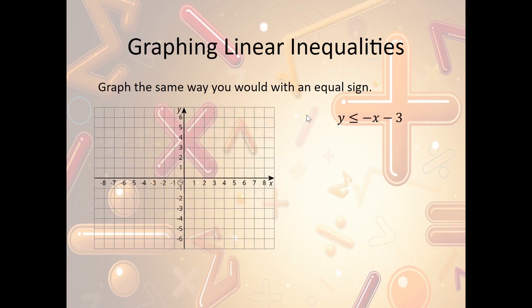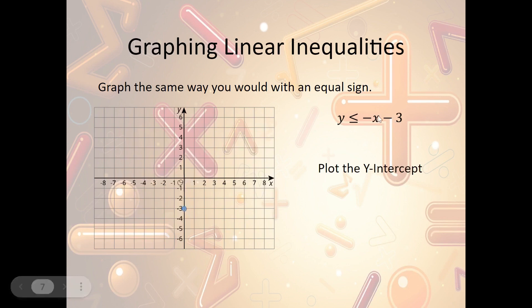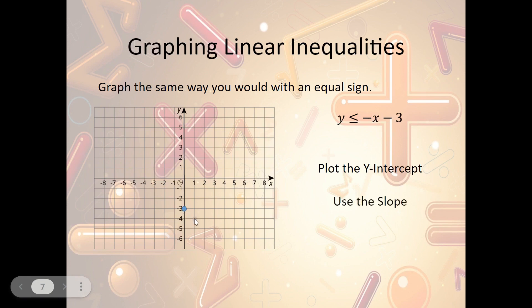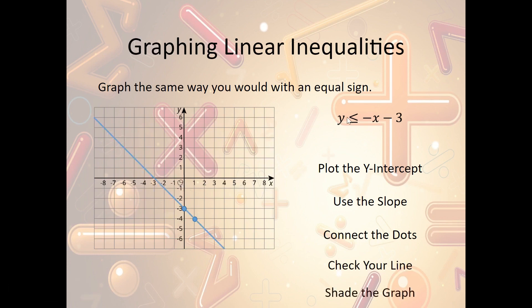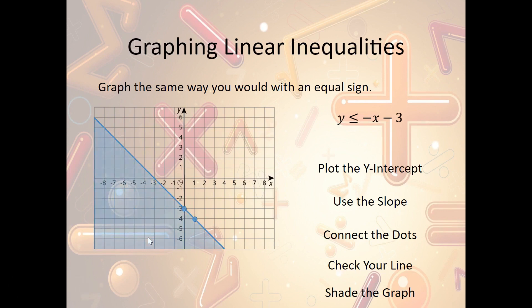Let's look at another example: y is less than or equal to -x - 3. I plot the y-intercept at negative 3, going down 3. My slope is negative x, which is really negative one over one, so I go down 1 to the right 1 and plot that point. They did add something extra — the bar — so we add to it and use a solid line. Then I shade where y is smaller than the line: going along the y-axis, I find where they meet and shade the area below. That's how I graph this linear inequality.